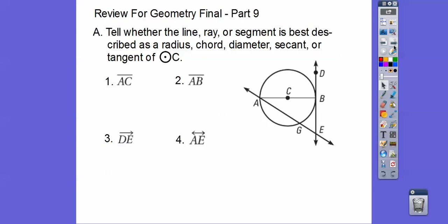Tell whether the line, ray, or segment is best described as a radius, a chord, a diameter, a secant, or a tangent of this circle here. We got this figure over here. Segment AC, that is a radius. Segment AB, that is a diameter.